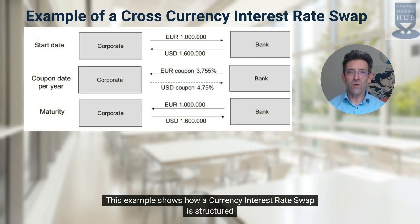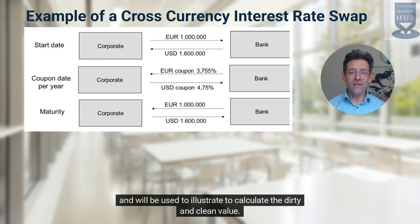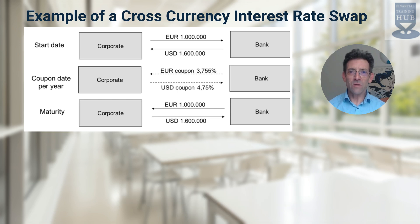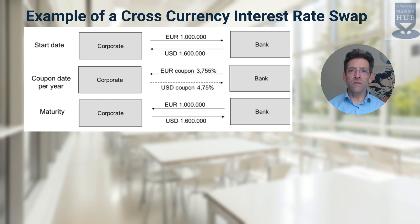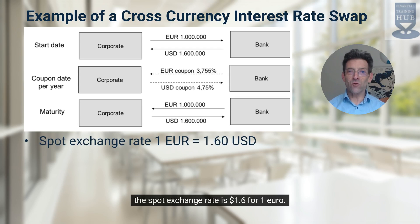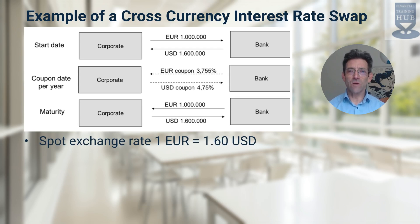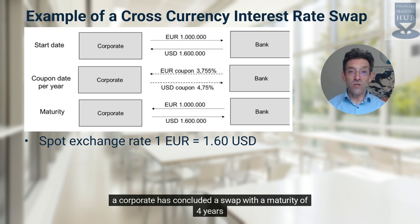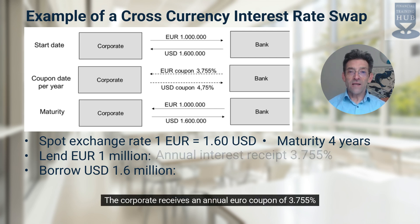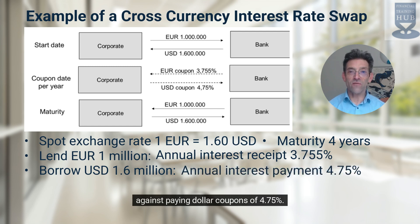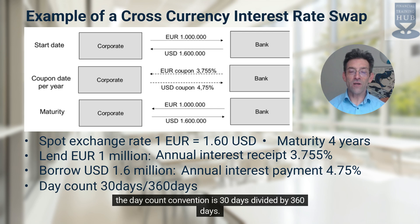This example shows how a currency interest rate swap is structured and will be used to illustrate how to calculate the dirty and clean value. A currency interest rate swap is a combination of two opposite loans in different currencies. At transaction date, the spot exchange rate is $1.60 per euro. In this example, a corporate has concluded a swap with a maturity of four years for lending one million euro and borrowing $1.6 million with a bank. The corporate receives an annual euro coupon of 3.755% against paying dollar coupons of 4.75%. The day count convention is 30 days divided by 360 days.